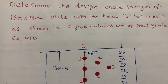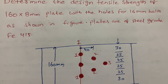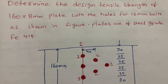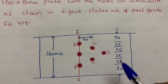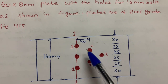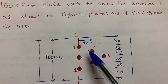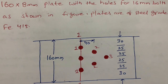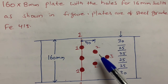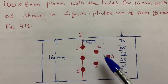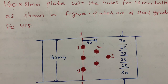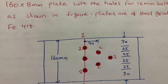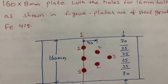For tension members, three types of failure are considered: first, yielding of the gross section; second, rupture of the critical section; and third, block shear strength. In this case we are not considering block shear failure because the bolt arrangement spacing is very short, making rupture failure more likely. So we are calculating only yielding of gross section and rupture of critical section, eliminating block shear.